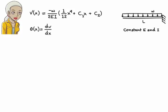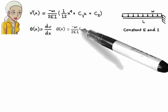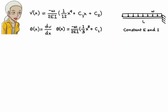I know that the slope equation equals the derivative of the deflection equation. So, the slope equation can be written as theta x equals negative w over 2EI times one third of x cubed plus c1. Now, let's see how the boundary conditions come into play.